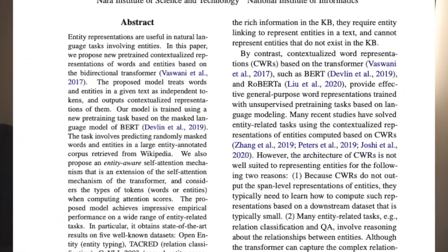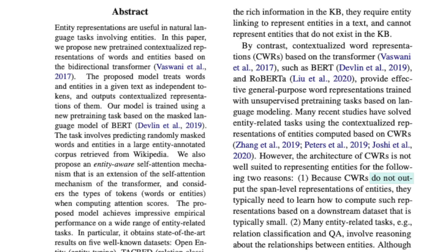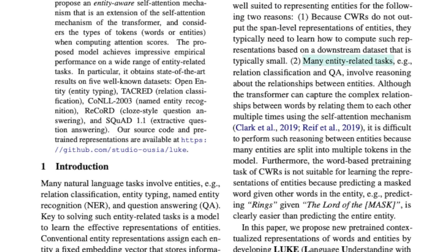Let's jump straight into it. Contextualized word representation based on Transformer has yielded strong performance in many different NLP tasks. However, they're still not suitable for entity-related tasks because, firstly, they do not output span-level representation of entities. Secondly, many entity-related tasks require the model to reason over the relationships between entities. Traditional self-attention mechanism only captures the relations between words, but entities are made up of multiple words in the model, and so it's difficult to capture the relations between entities.